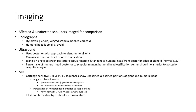Ultrasound uses an axial approach to the glenohumeral joint and can assess the humeral head prior to ossification. The alpha angle is defined as the angle between the posterior scapular margin and the tangent to the humeral head from the posterior edge of the glenoid — normally no more or less than 30 degrees.